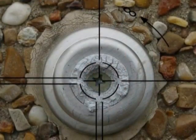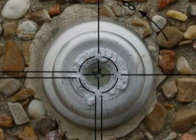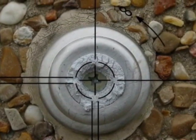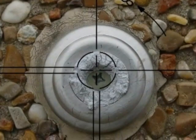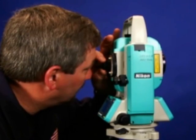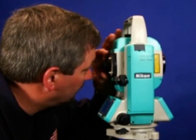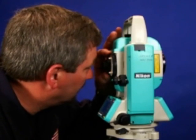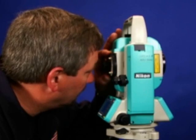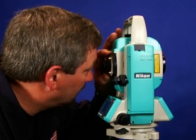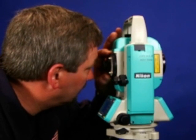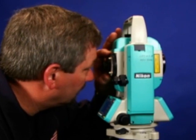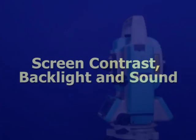If the target image does not move, there is no parallax. If the target image does move, rotate the telescope focusing ring and move your eye vertically and laterally again to check whether the target image moves relative to the reticle crosshairs.